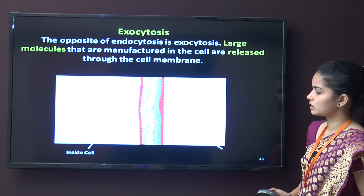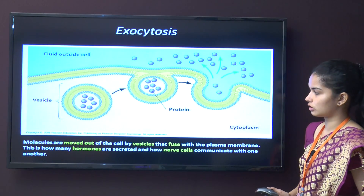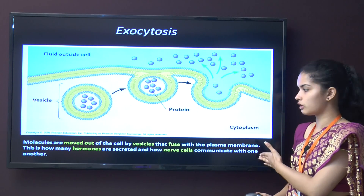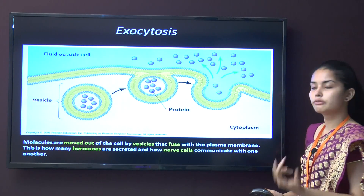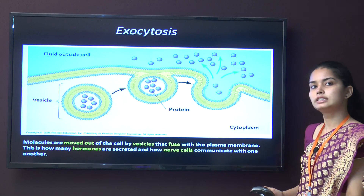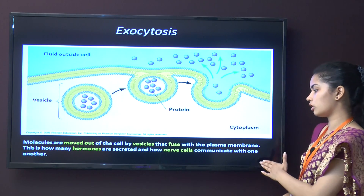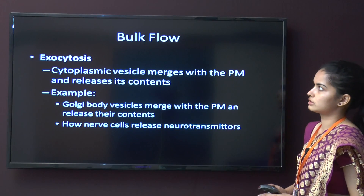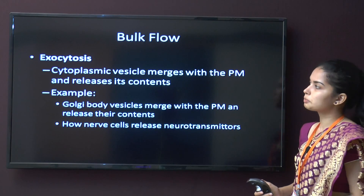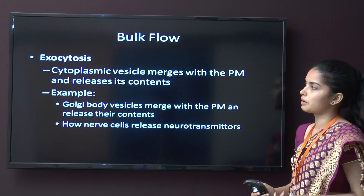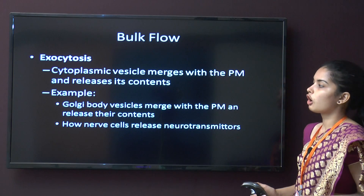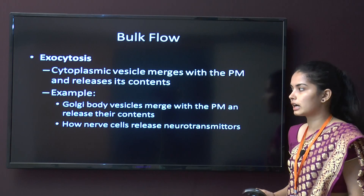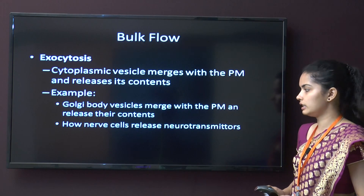The opposite of endocytosis is exocytosis — materials are thrown out of the cell. Molecules move out of the cell by vesicles that fuse with the plasma membrane. This is how hormones are secreted or nerve cells secrete neurotransmitters. In exocytosis, cytoplasmic vesicles merge with the plasma membrane and release their contents — this is how nerve cells release neurotransmitters.